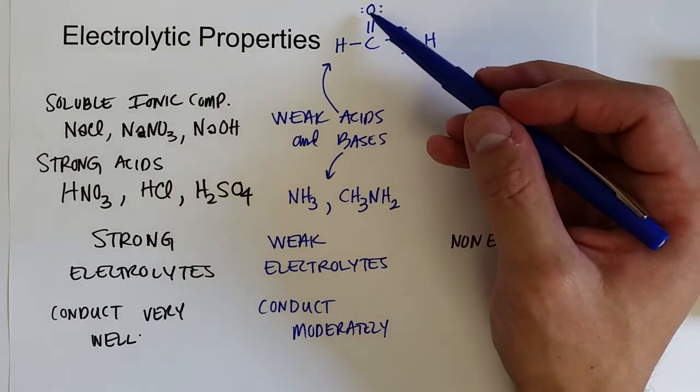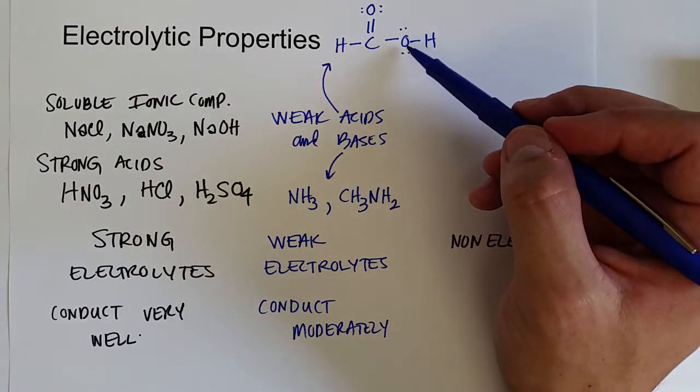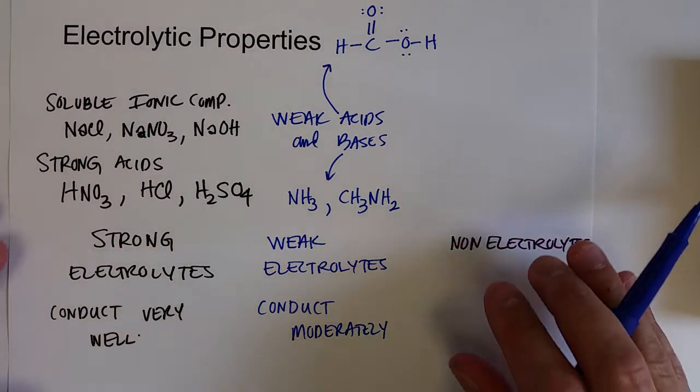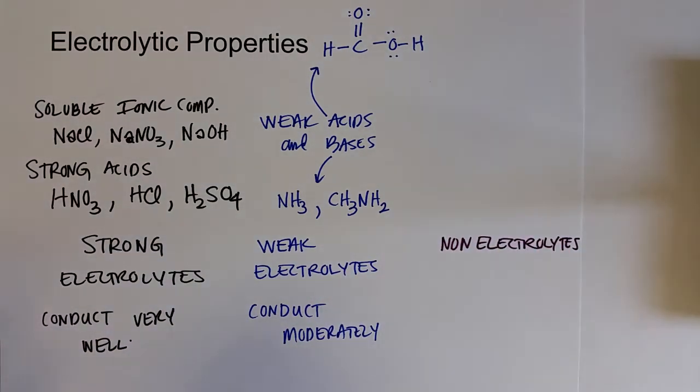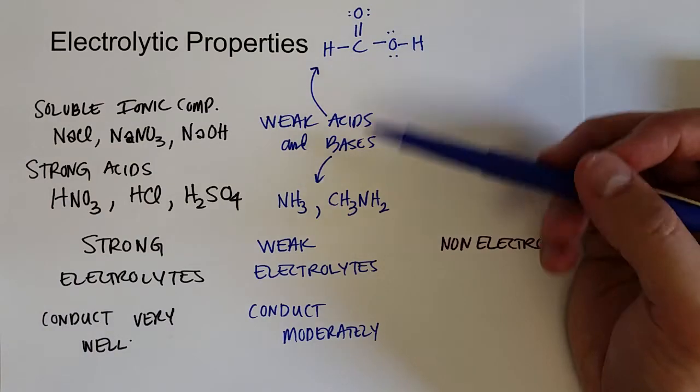Where a carbon is double bonded to an oxygen and single bonded to an oxygen, which is also bonded to a hydrogen. So we'll talk about that more in organic chemistry. But those are examples of weak acids and weak bases.